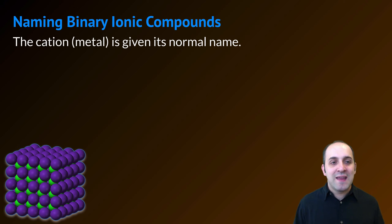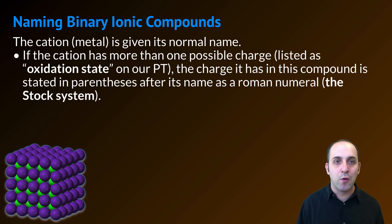The cation, the metal, is just given its normal name. Whatever it is off the periodic table, that's the name we're going to write down. But, if the cation has more than one possible charge, which would be listed on the periodic table as an oxidation state, the charge it has in this particular compound has to be stated in parentheses after its name as a Roman numeral. This is called the stock system. We already talked about this back when we talked about ions in lessons 5 and 6, but it's a good idea just to remind ourselves of these rules again here in our ionic compound naming.